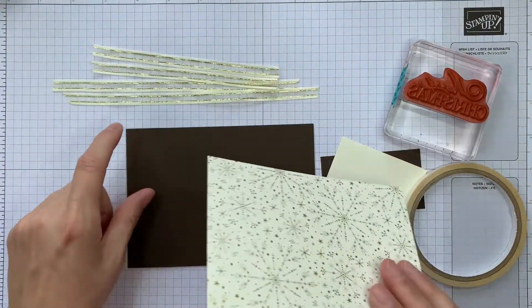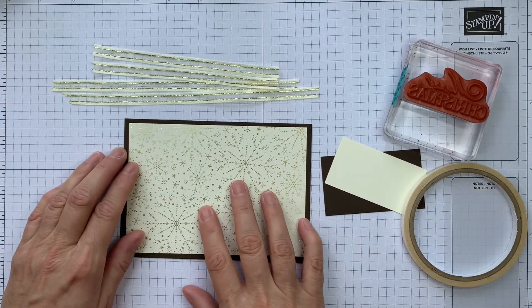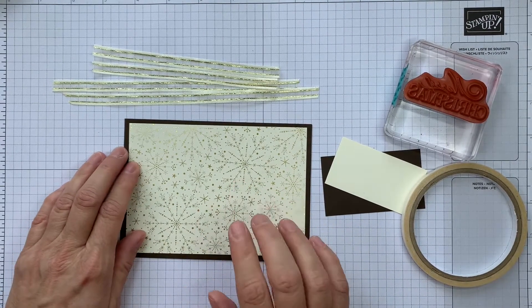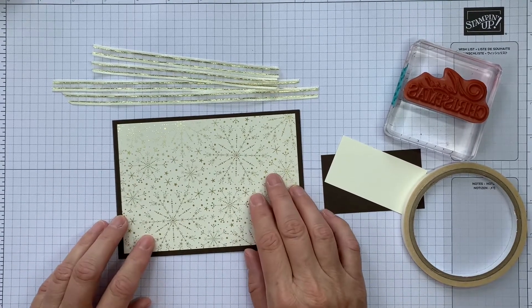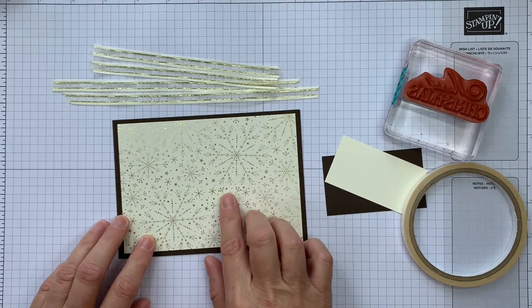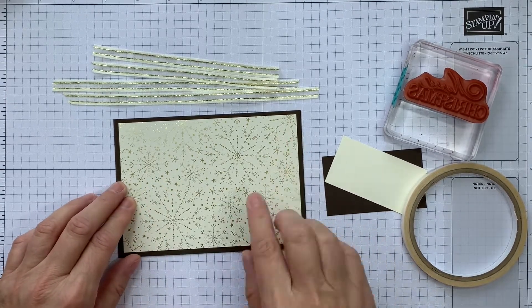But this would look equally good with Merry Merlot. So Merry Merlot, Gold and Vanilla go really well together as well. So I've cut a card front layer of the Lights Aglow paper and this is three and seven eighths by five and a half.